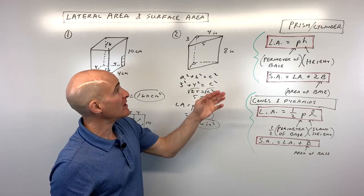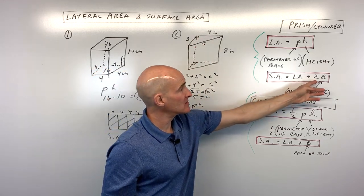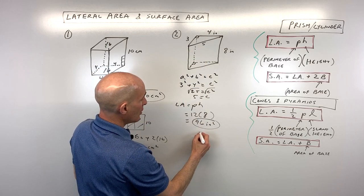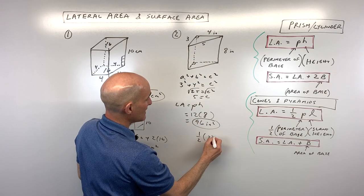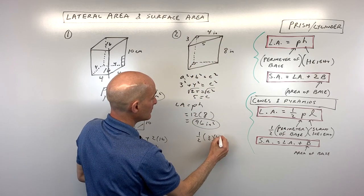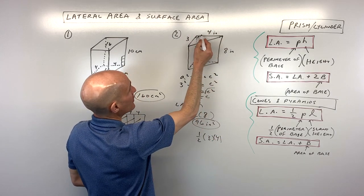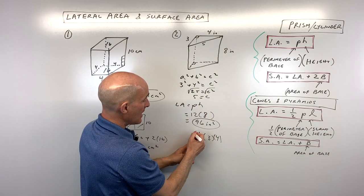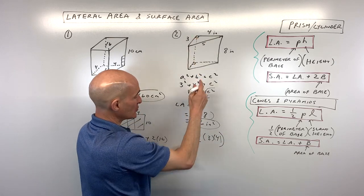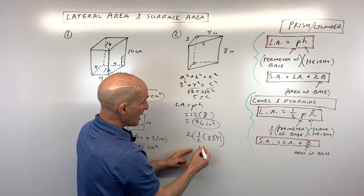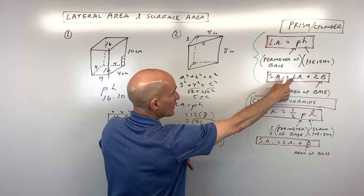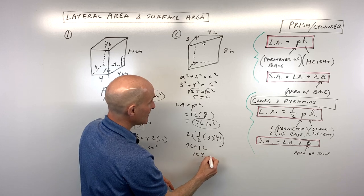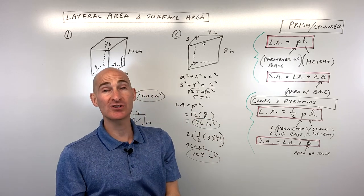To find the surface area, we add the two triangular bases to the lateral area. The area of one triangle is one-half times three times four — the height is always perpendicular to the base — so that's six. Two triangles gives us 12. Adding that to the lateral area of 96 gives us a surface area of 108 inches squared.